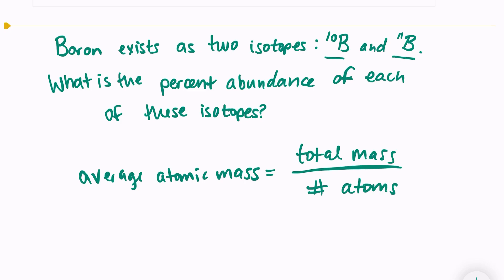So the average atomic mass I can take straight from the periodic table. Find boron, and we see that the average mass of boron is 10.81.